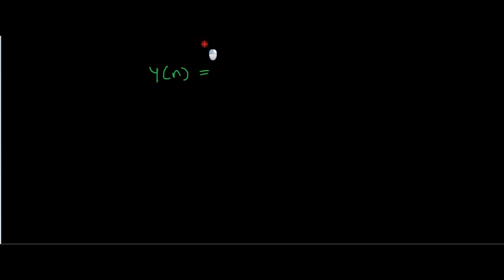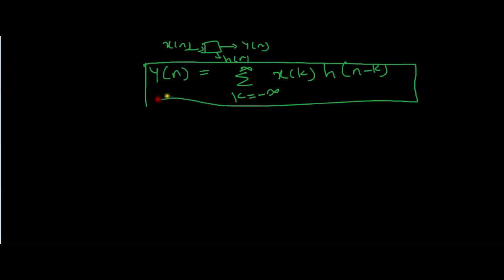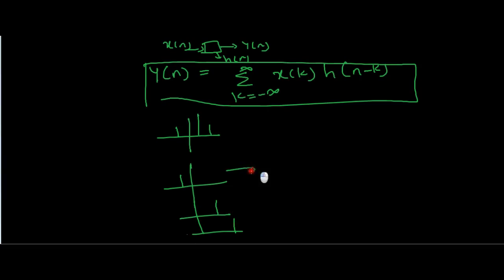Let's state the equation of convolution for discrete time signals. The output Y(N) of an LTI system with input X(N) is given by the summation from K equals minus infinity to infinity of X(K) times H(N minus K). This means we take X(N), divide it into a number of impulses, and then find the impulse response for each of those impulses.